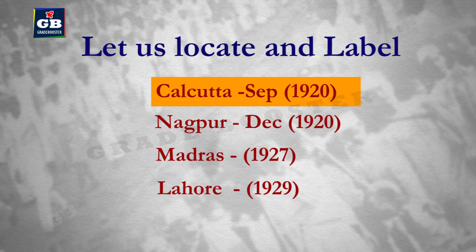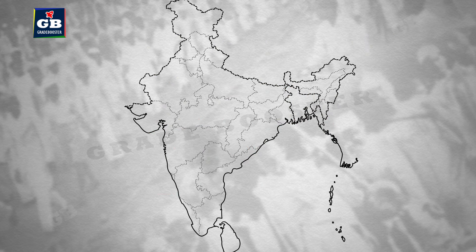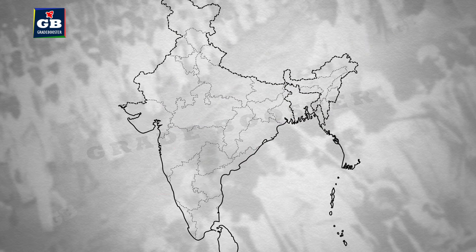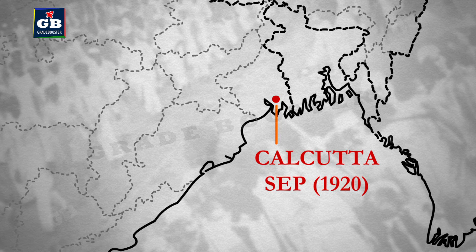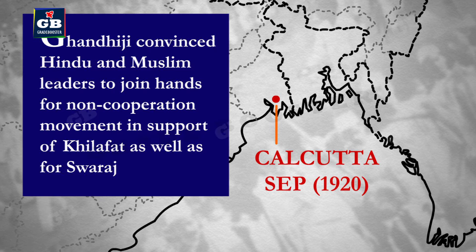First, let us locate the Indian National Congress session held at Calcutta in September 1920. Calcutta is in West Bengal, so we move to the eastern part of India. It is towards the sea coast but not on the border. Calcutta is located on the banks of the Hooghly River. During this Calcutta session, Gandhiji convinced Hindu and Muslim leaders to join hands for a non-cooperation movement in support of Khilafat as well as for Swaraj.